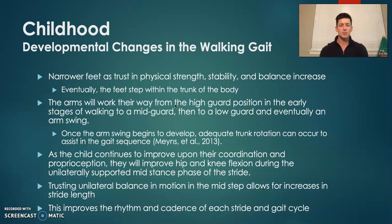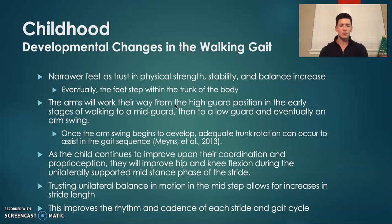As they gain experience, their coordination, their proprioception, and those synapses between neurons begin to strengthen. This will help them improve their hip and knee flexion during the unilateral stance phases of the stride. And as they gain experience, the rhythm and cadence of each stride during the gait cycle will improve as well.